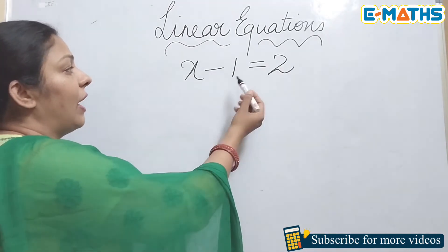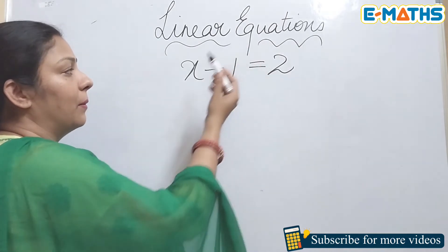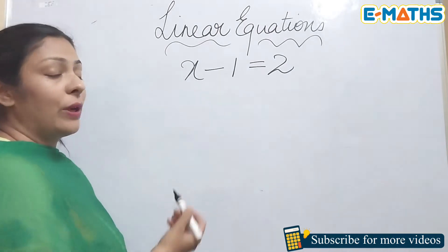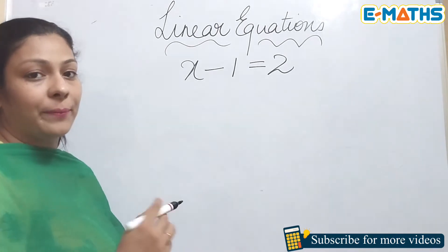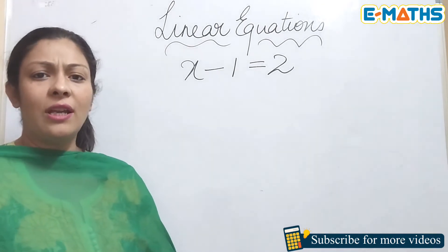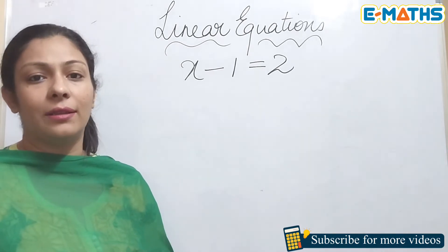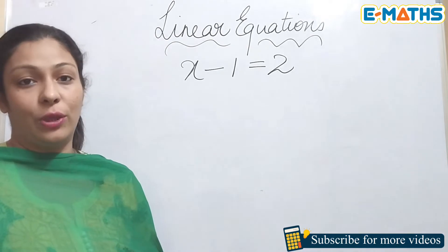If you see, we have this as a number, this as a number - only this is a variable which is unknown. So we're going to solve this equation to find the value of x. Now I'm going to discuss only one method and that is transposition, which is the best method to do linear equations.